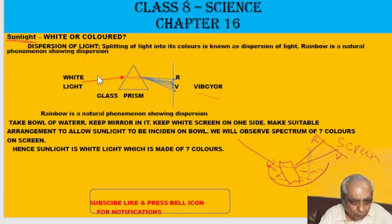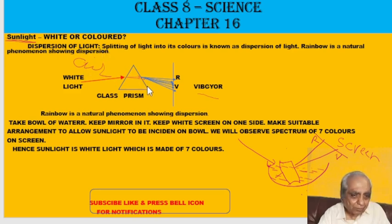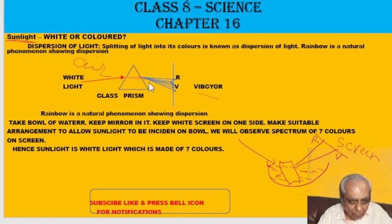Why does white light split up? The answer is that the velocity of various colours of light is different in different media. In glass, the velocities of violet and red are different, but in air — strictly in vacuum — their velocities are the same. When velocities are the same, all colours travel together and mix to form white. But when passing through glass, their velocities differ, so the colour with maximum velocity comes out first, then the second, and so on — the colours get split up.